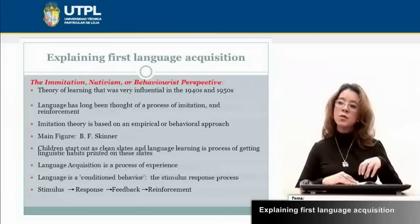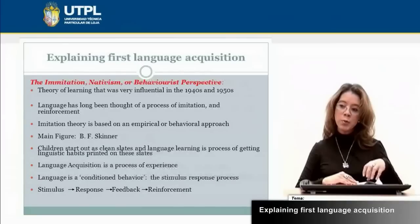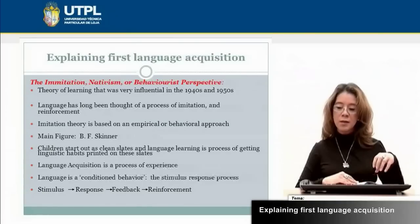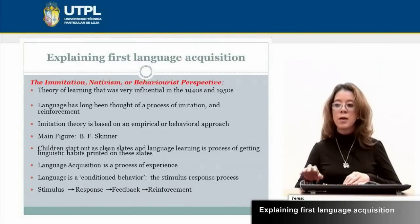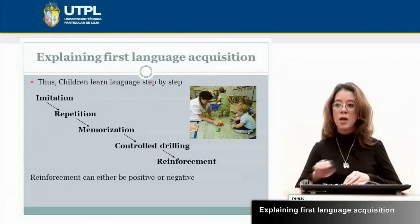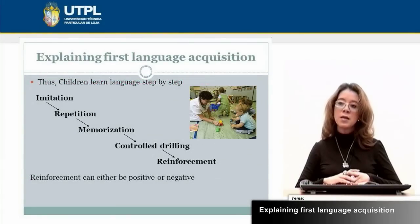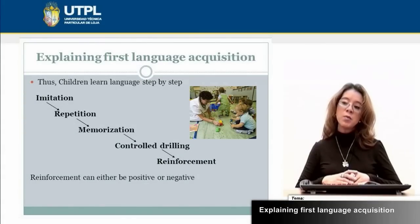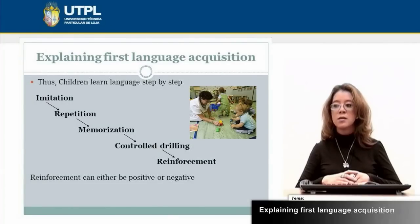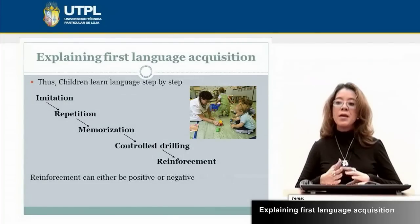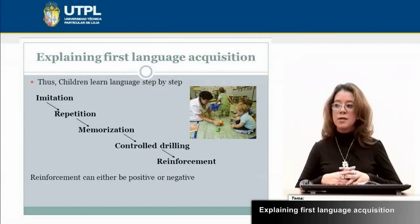In order to know how languages function, Skinner proposed the stimulus-response process, that is: stimulus, response, feedback, and reinforcement. We have here the step-by-step of first language acquisition in the behaviorist perspective: imitation, repetition, memorization, controlled practice, and reinforcement. The reinforcement can be positive or negative.